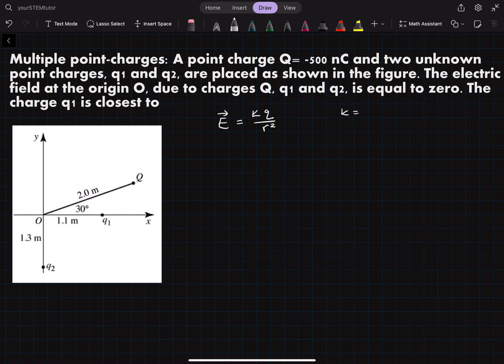So our k is our constant, its value is 8.99 times 10 to the 9 newtons per meter squared per coulomb squared. Our radius is just our length and our q is our charge which is what we're trying to find for the point q1.